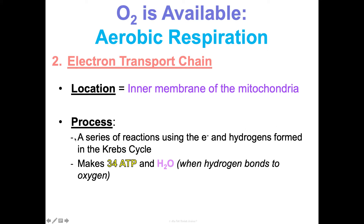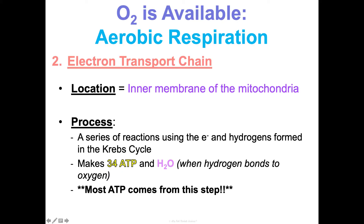The next step is the ETC — the electron transport chain — which happens in the inner membrane of the mitochondria. It's a bunch of reactions where we use electrons and the hydrogens formed in the Krebs cycle. The main thing to understand here is we charge up about 34 ATP, and we also make water when those hydrogens bond to oxygen. The most ATP from cellular respiration comes through this ETC step.